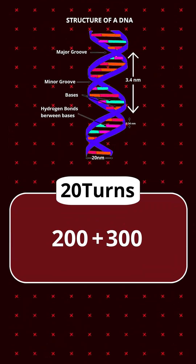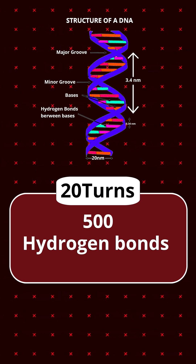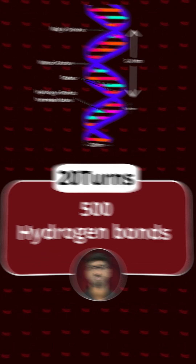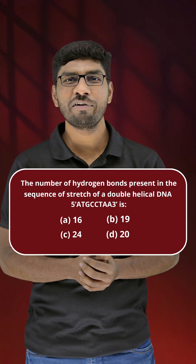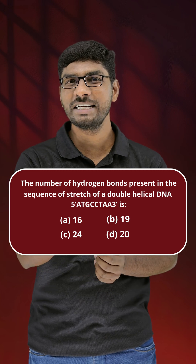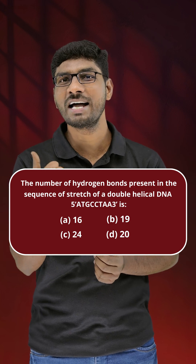So total hydrogen bonds are 200 plus 300 — 500 hydrogen bonds. The answer is 500 hydrogen bonds present in the given DNA strand. What is the number of hydrogen bonds in this question? Please comment your answer.